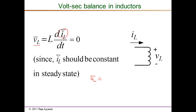The volt-second balance vL_bar = 0 is a simple but powerful expression. We must be careful applying it: it refers to the average over one complete switching period, not a sub-interval. It is only valid in DC steady state, not during transients. And it is the voltage across the inductor — it does not imply the inductor current is zero; only the average voltage across the inductor is zero.